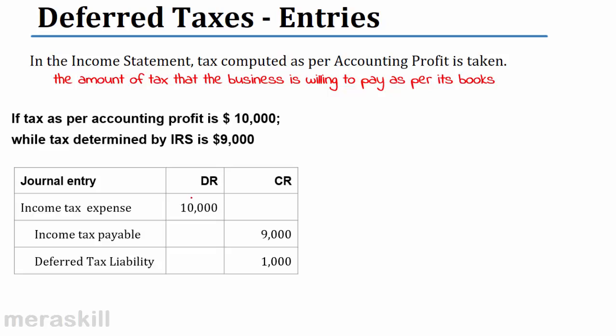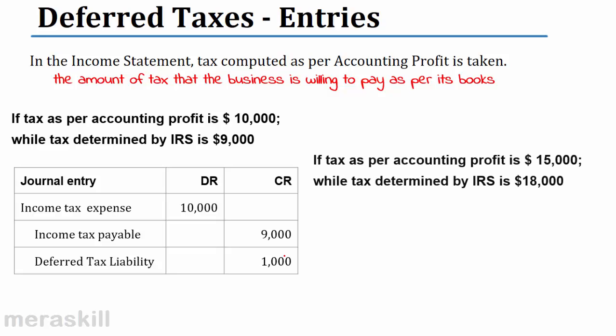The difference creates a liability because we think we should pay $10,000 but we are paying only $9,000. Therefore, a deferred tax liability of $1,000 is recorded.